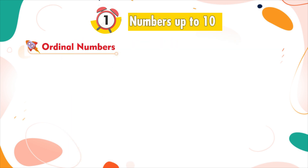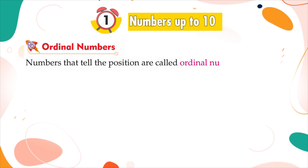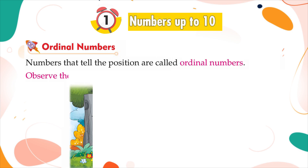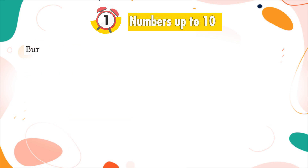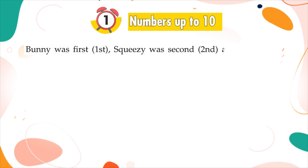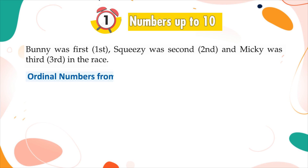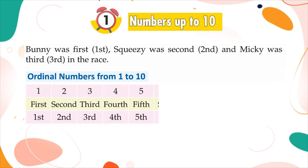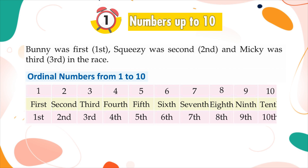Ordinal numbers. Numbers that tell the position are called ordinal numbers. Observe the following picture. Bunny was first, Squeezy was second, and Mickey was third in the race. Ordinal numbers from one to ten: first, second, third, fourth, fifth, sixth, seventh, eighth, ninth, tenth.